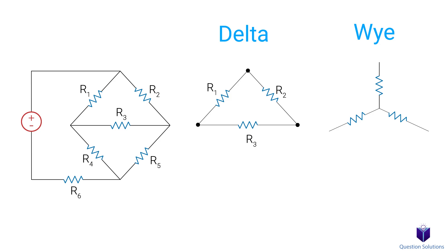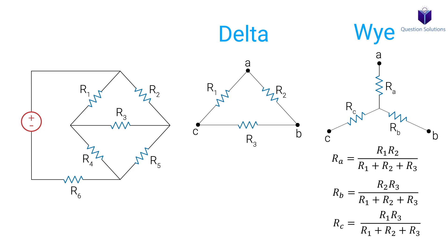Let's label these points A, B, C so then the corresponding points on the Y can be labeled A, B, C. On the Y, we will label the resistors based on the node letter it's connected to. So we have RA, RB, and RC. I will show the equations representing these resistors and then we can go through them. You don't need to memorize this because you can just see the pattern on how this works. So if we look at the first equation, it tells us the value of RA.